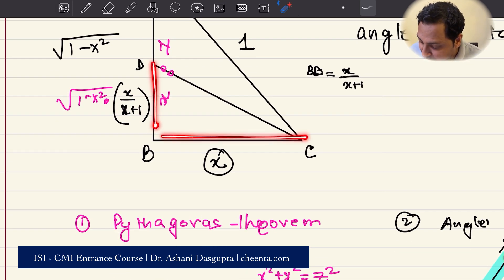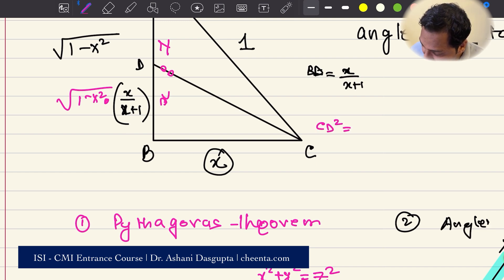So now we have BD, we have BC. So we use one more time Pythagoras theorem to find out CD. So CD squared is equal to square of X by X plus 1 times square root of 1 minus X squared whole square plus X squared. So can all of you try and find the simplified form of CD and put it either in the comment section or go to the community link to see what others are discussing on this particular problem.